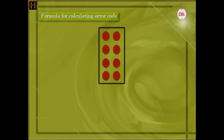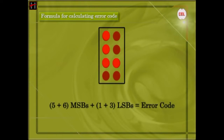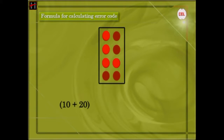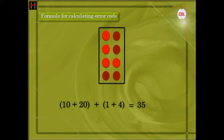Now if LED numbers 1, 3, 5, and 6 blink, then the total values assigned to these LEDs will be added to get the error code. For example, 10 plus 20 plus 1 plus 4 gives 35. This means that error number 35 has occurred in the system.